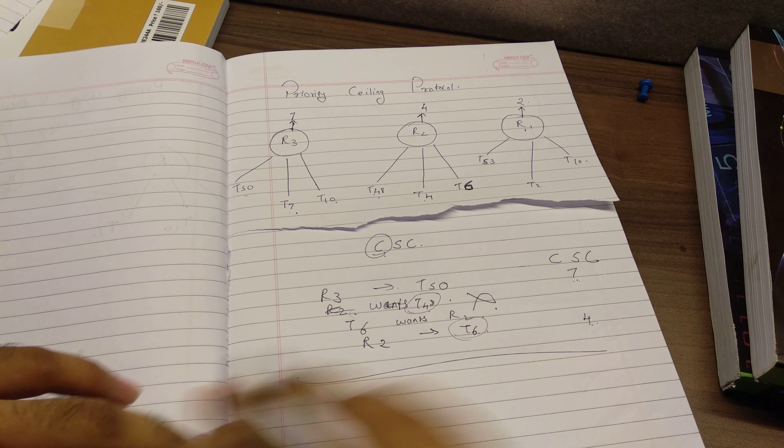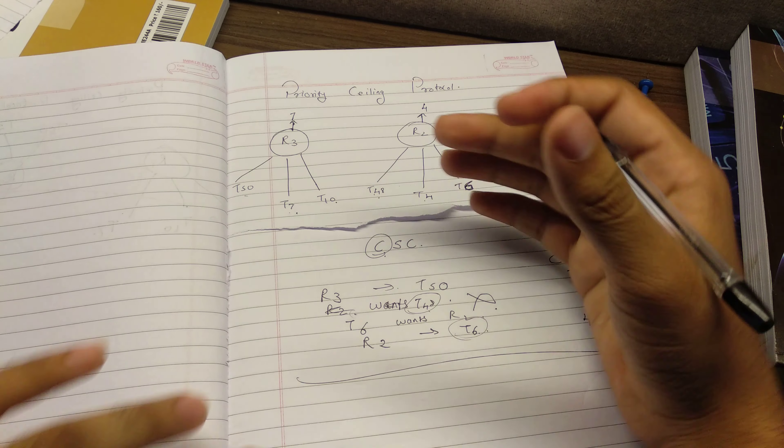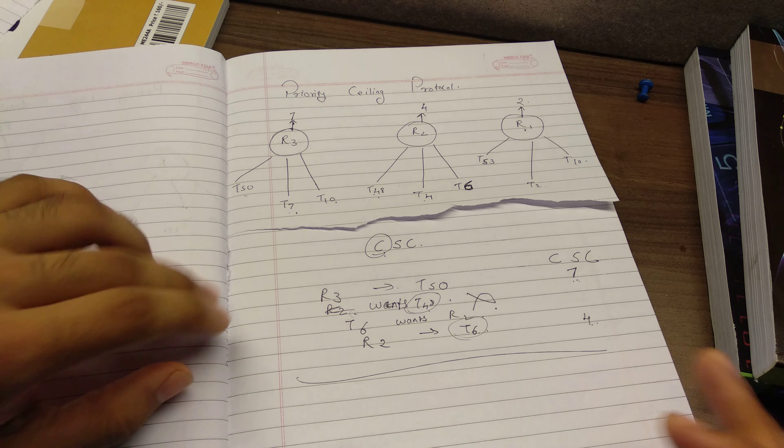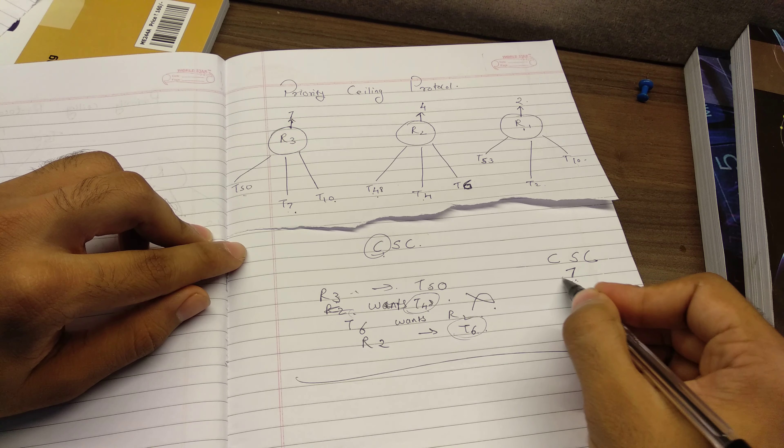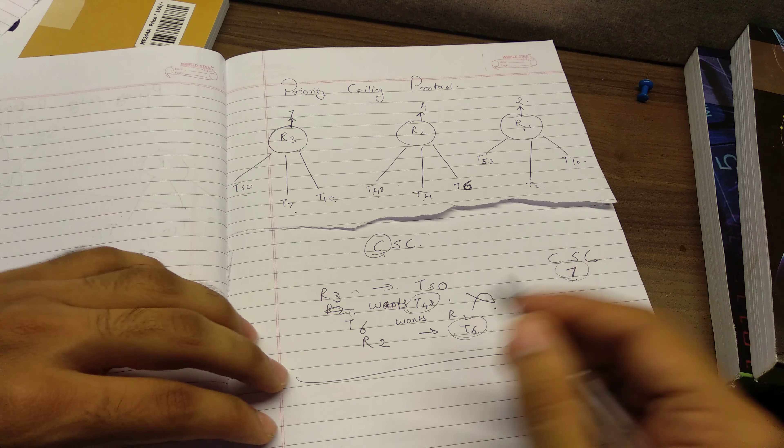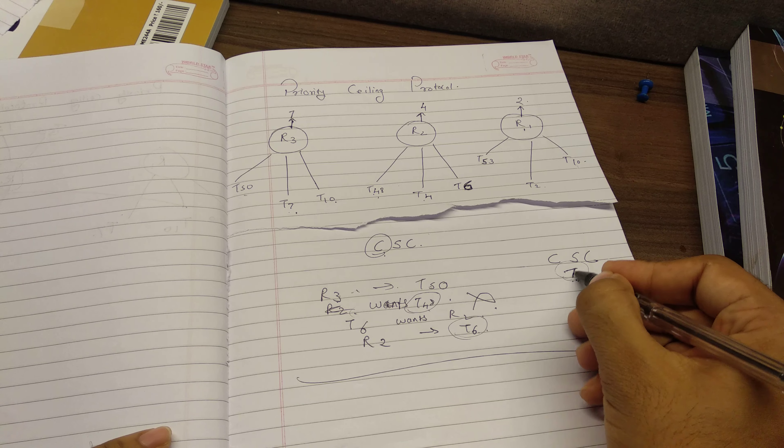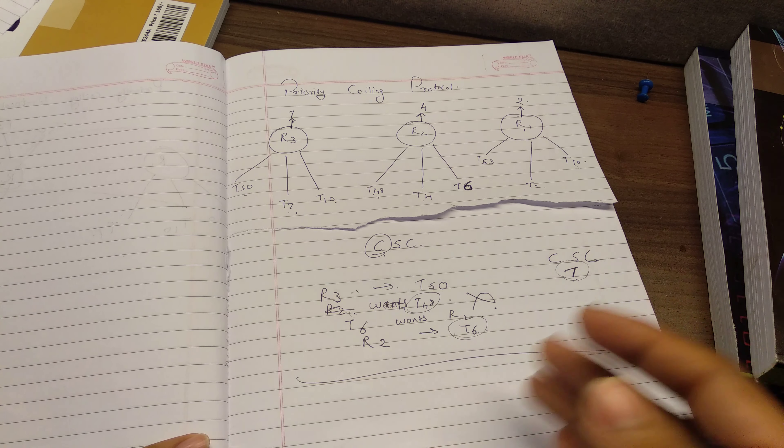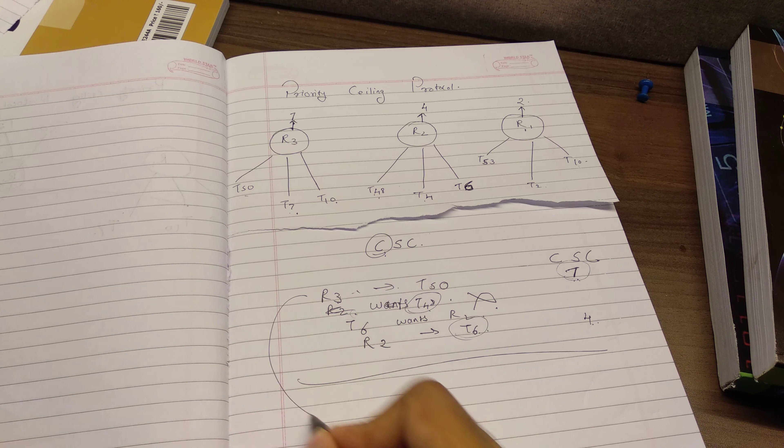So as you can completely infer out is here, a resource is given a priority and not the task itself. So there are a lot of concepts in one concept is wherein if T50 is holding R3, the current system ceiling is seven. So of course, like T50 is getting kind of the priority of seven, it will not get the whole priority of seven. Like another task can interrupt this task and complete his business.